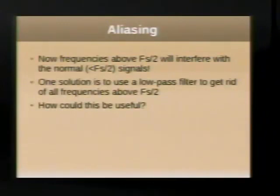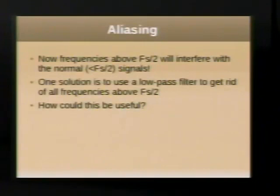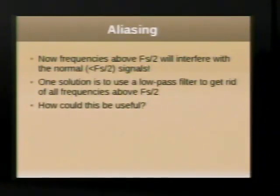The sampling frequency is commonly expressed as Fs, and the Shannon limit is Fs over 2. Frequencies above Fs/2, if you haven't filtered them out, will interfere with your in-band signals. What you can do is use a low-pass filter to chop off above a certain frequency - set the filter point to about half your sampling frequency to get rid of the stuff that would otherwise interfere with your sampling.